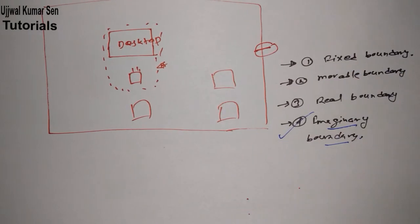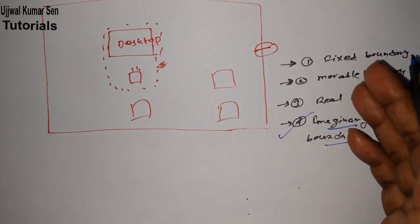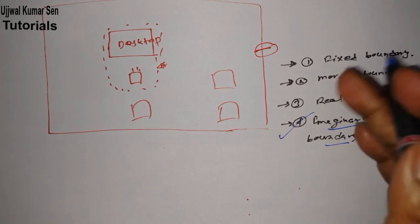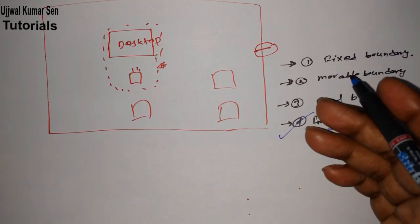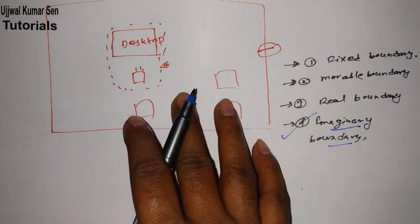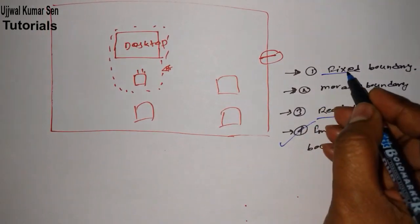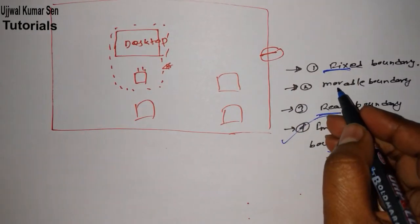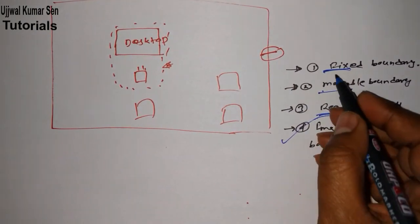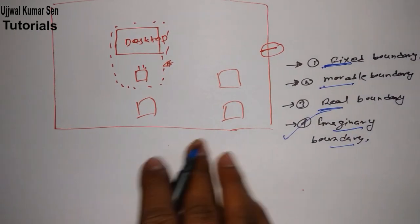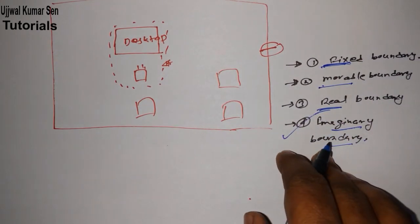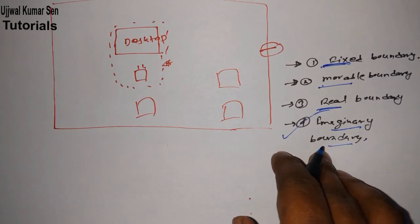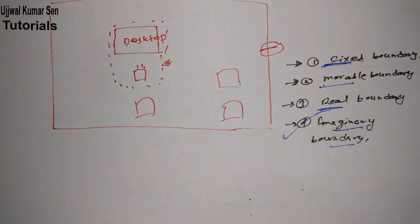Real boundary — suppose that you are sitting in a room and there is a wall. That wall is a real boundary. It cannot be passed without, for example, a door — only through the door can you go through; otherwise you cannot. Real boundary and fixed boundary are almost the same. Fixed boundary means the boundary is fixed. A wall that doesn't move is both a real boundary and a fixed boundary.